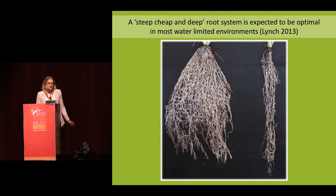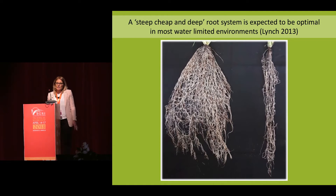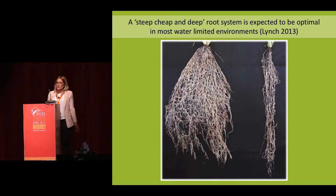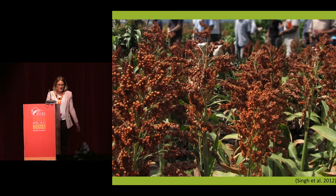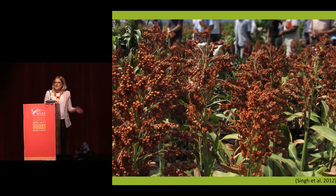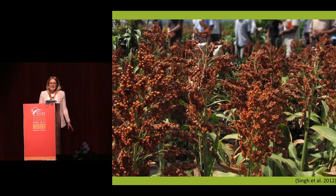There's some speculation that the steep, cheap, and deep root system is expected to be optimal for most cereal crops in water-limited environments, however we've just heard from Samir that this may not always be the case and needs more validation. In sorghum, a narrower root system does appear to lead to improved yield under water-limited conditions, and they've found a correlation between narrow root system architecture and stay-green in sorghum.